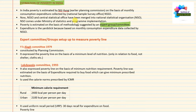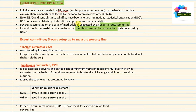The first committee was the YK Alagh Committee in 1979, constituted by the Planning Commission. Let's look at the different expert committees or groups which tried to measure the poverty line. These committees were based on the monthly consumption expenditure data collected by NSSO, now NSO.